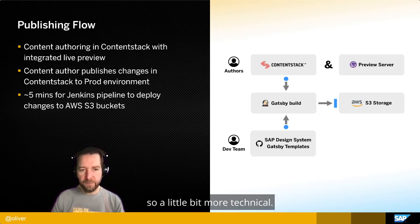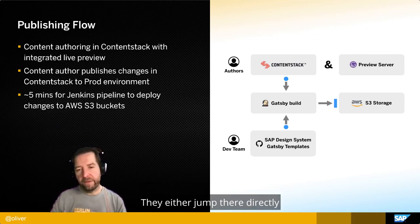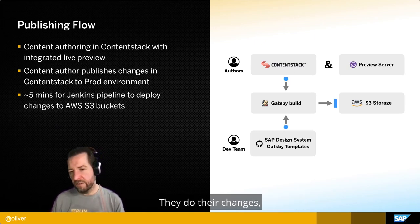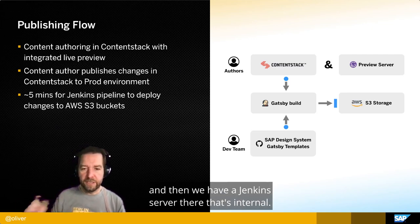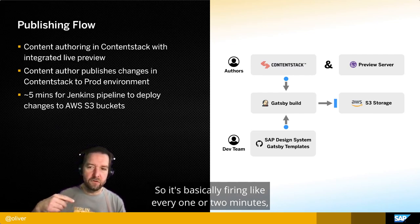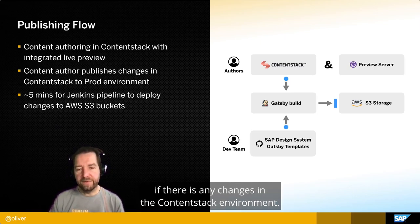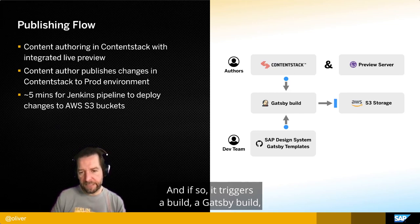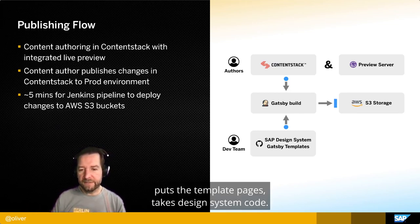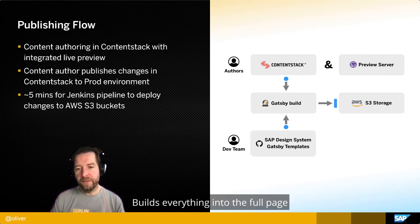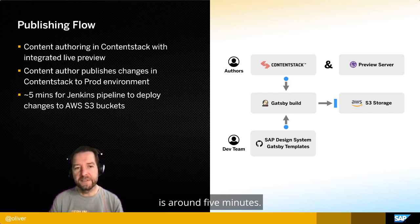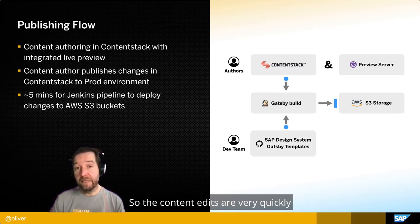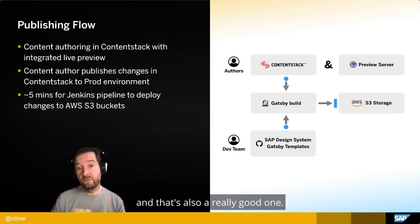From the publishing flow perspective — how does it work technically? It's fairly straightforward. Authors go into ContentStack, either jumping there directly from the topic page or from Siteimprove. They make their changes, preview on our custom preview server, then publish to the productive environment. A Jenkins server internally queries every one or two minutes for any changes in the ContentStack environment, and if there are any, it triggers a Gatsby build. It takes the template pages and design system code, builds everything into full pages, and publishes the data into Amazon S3 buckets. The full build pipeline runs in around five minutes, so content editors can see changes in the productive environment very quickly.